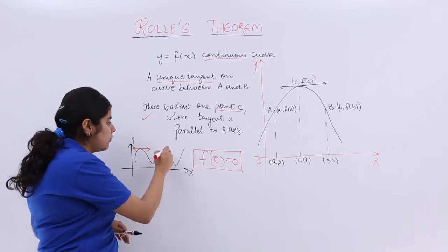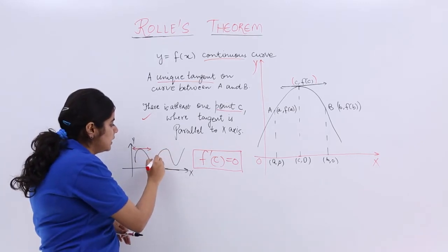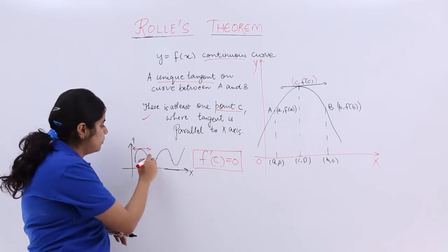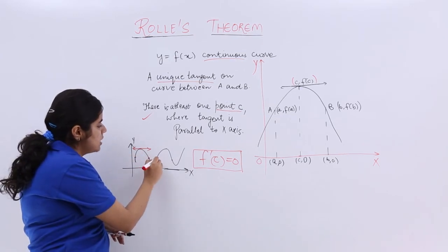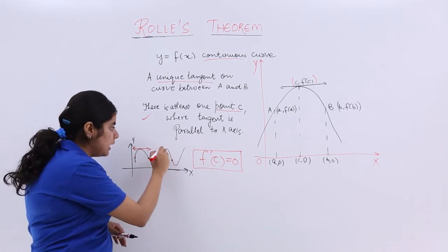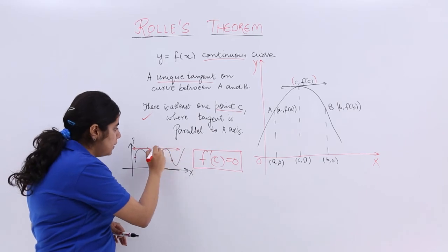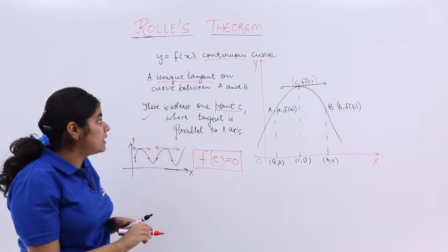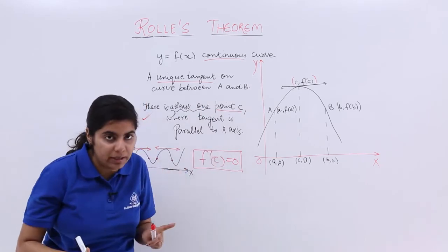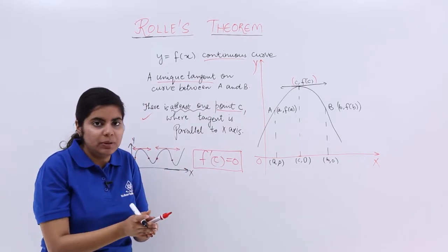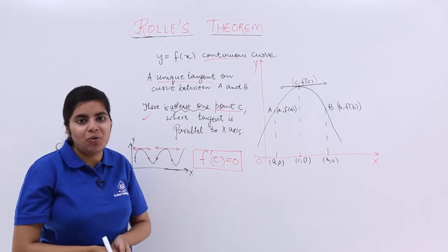Again the graph was rising, so again if I say that these two points are under consideration—first it was these two points, now it is these two points—then again what will happen is there will be one more tangent. So that is why there is the usage of at least one. Minimum one point would be there. There can be more than one also.